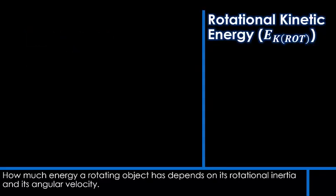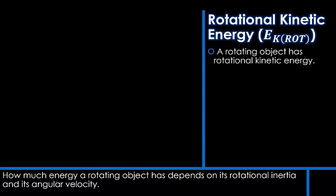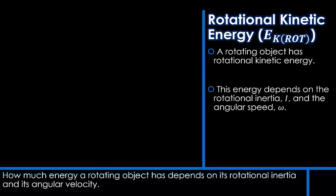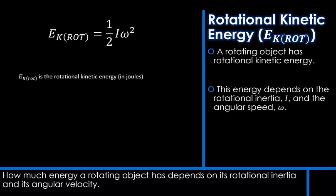Anything that's rotating has bits that are moving, so it has rotational kinetic energy. The energy depends on the rotational inertia of the object and the angular speed. Here's our equation for rotational kinetic energy: it's half I omega squared. The rotational kinetic energy is given the symbol E subscript k rotational, and it's measured in joules.